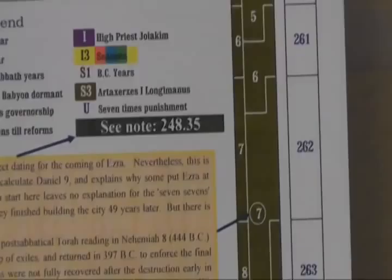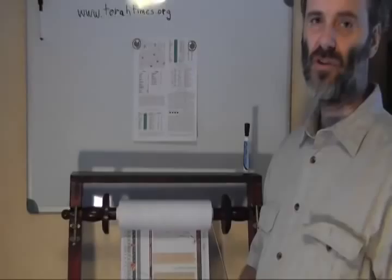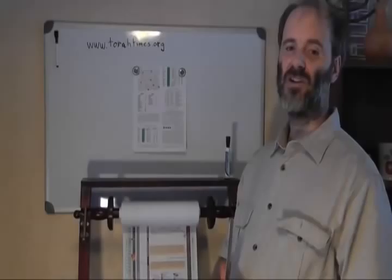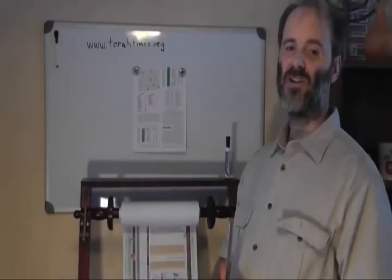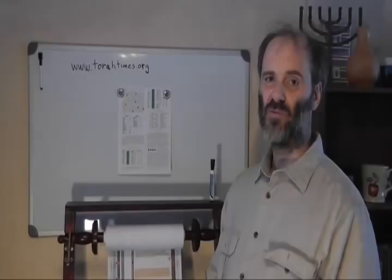Different groups before the beginning of the 20th century had different chronological theories to support their speculations. For instance, the Jehovah's Witnesses under Taze Russell had a chronological system that can no longer be defended because of these archaeological results and astronomical retrocalculation. The Mormons also had theories about ancient chronology that can no longer be defended. There are always groups and people speculating in chronology who are ignoring the astronomical and archaeological results.